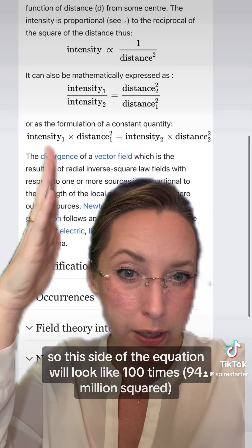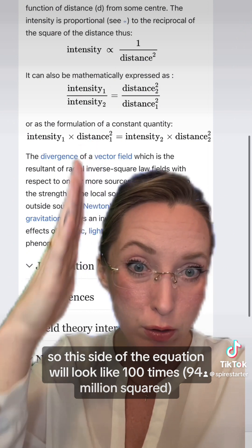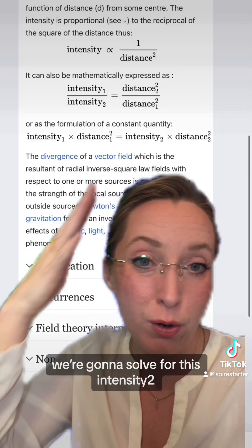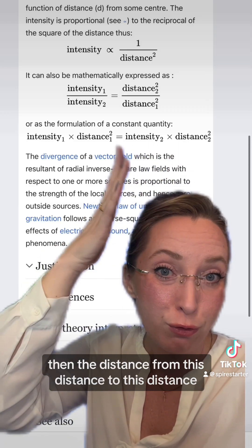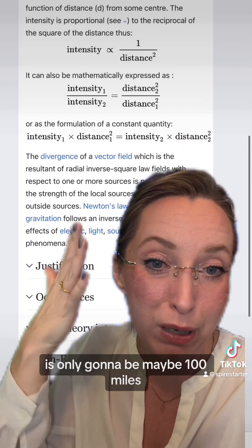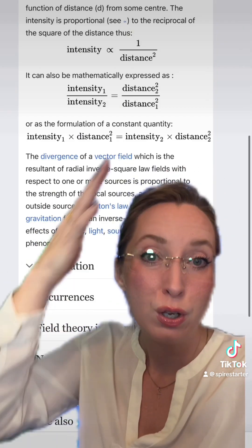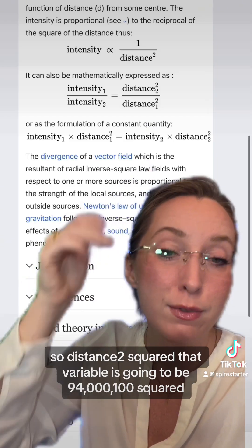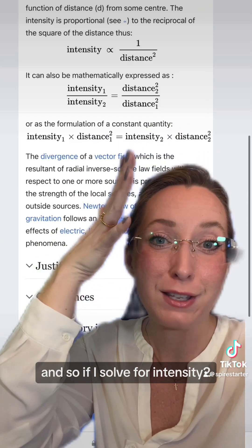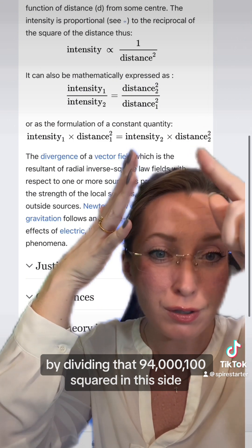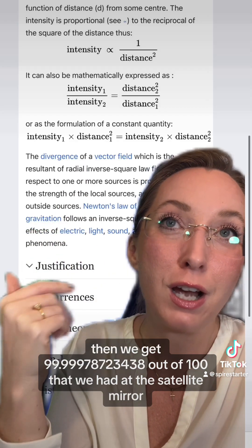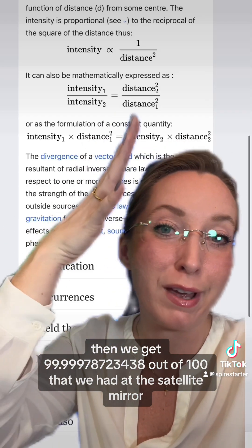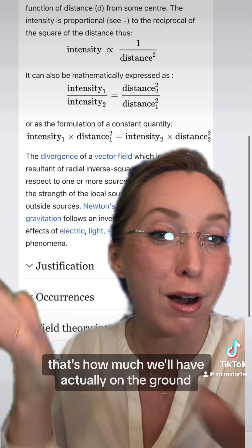This side of the equation will look like 100 times 94 million squared. Now to see the distance of those hundred units of intensity between the satellite and when it gets to earth, we're going to solve for this intensity two. But then the distance from this distance to this distance is only going to be maybe a hundred miles because these are low earth orbit satellites. So distance two squared, that variable is going to be 94 million, 100 squared. And so if I solve for intensity two by dividing that 94 million, 100 squared into this side, then we get 99.99978723438 out of a hundred that we had at the satellite mirror. That's how much we'll have actually on the ground.